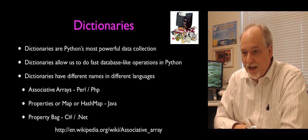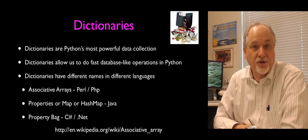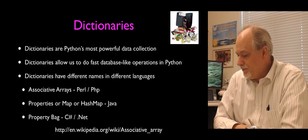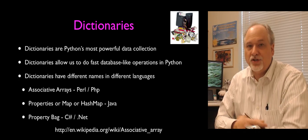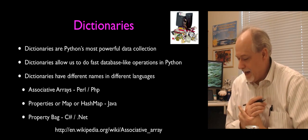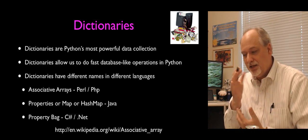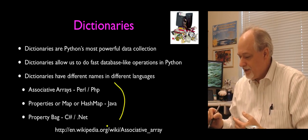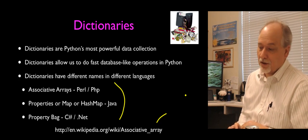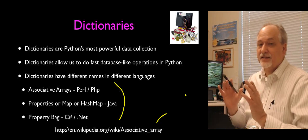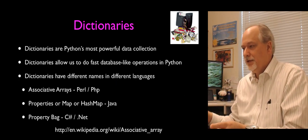Dictionaries have different names in different languages. Perl or PHP would call them associative arrays. Java would call them a property map or hash map. C# might call them a property bag or attribute bag. They're just the same concept — keys and values — across all these languages. Same concept, different names.